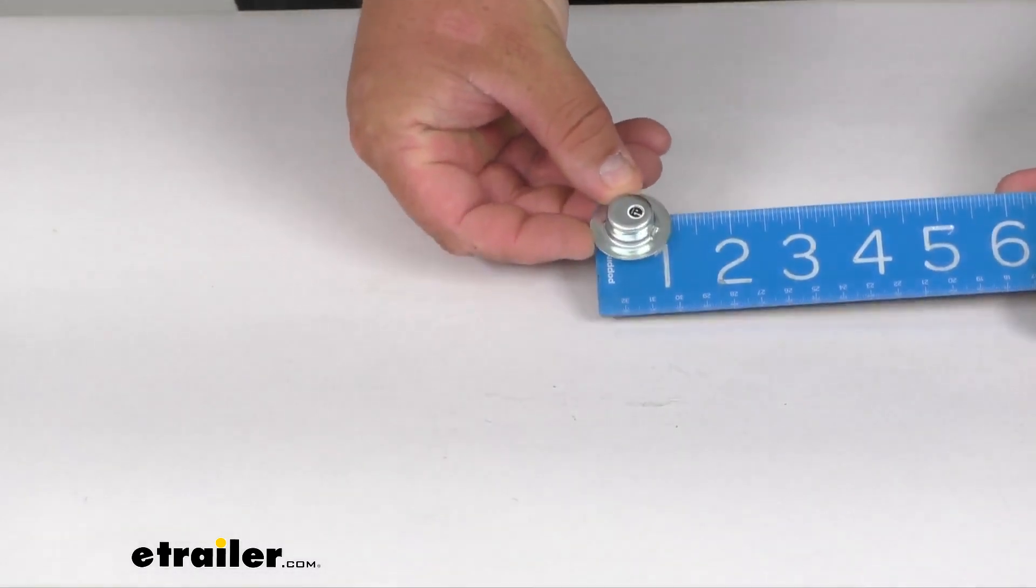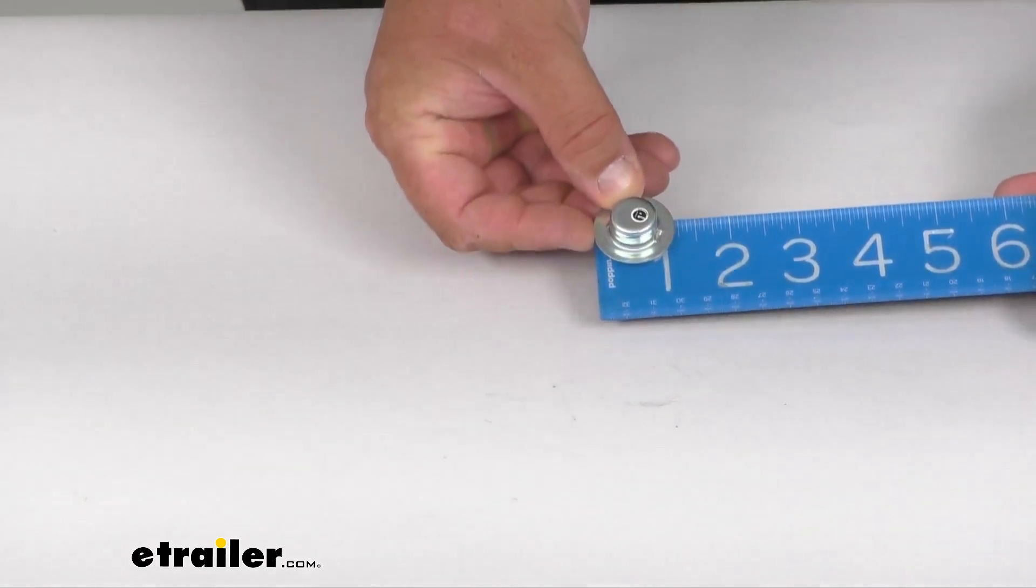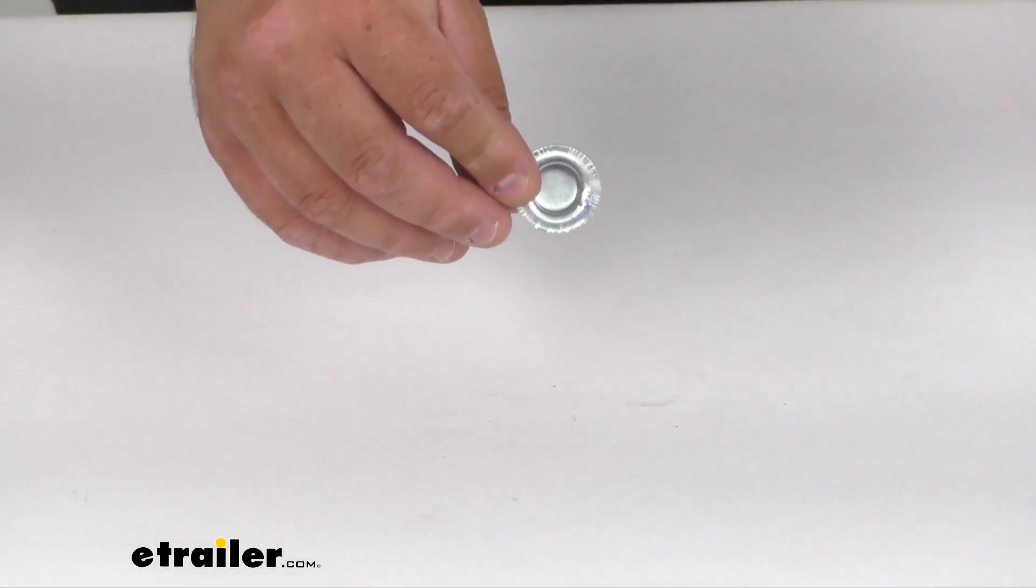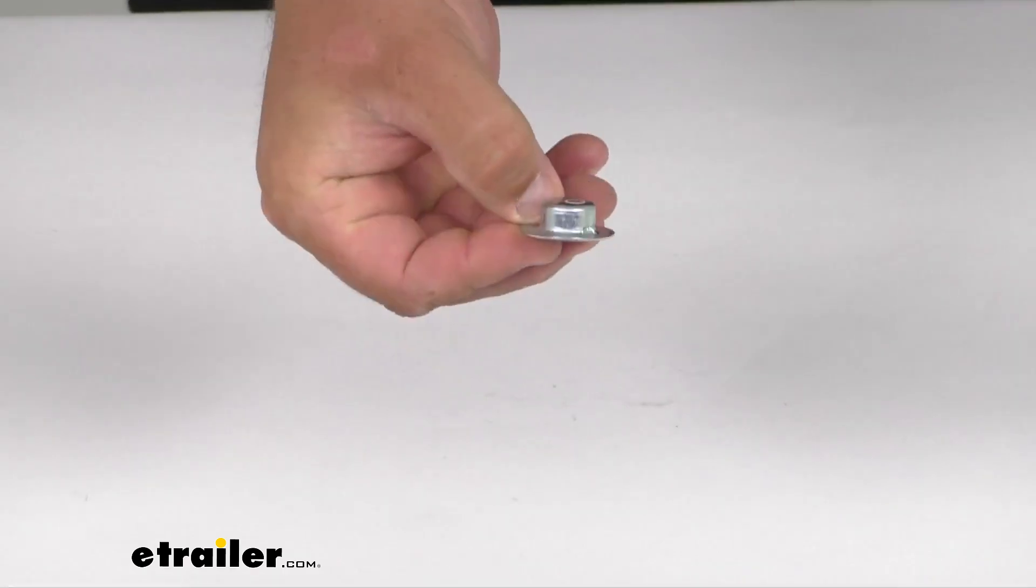Overall, this guy is right at one and a quarter inches, give or take, on the outside flange, but again the inside fits a 5/8 inch diameter roller shaft.